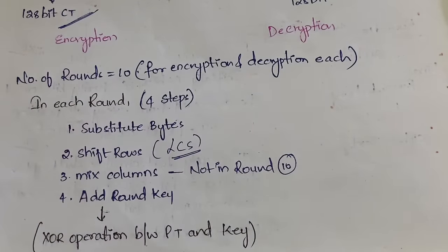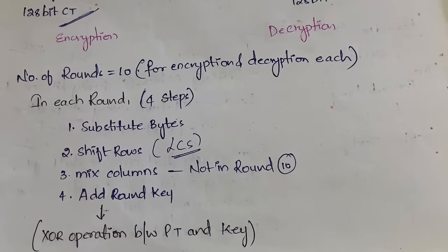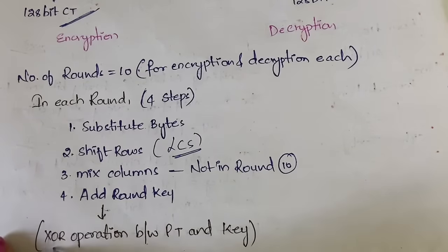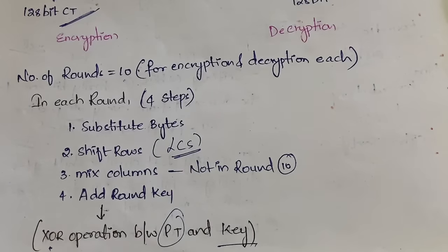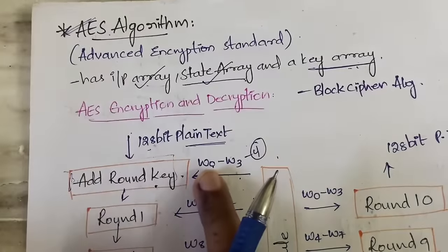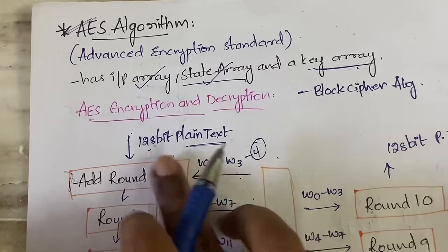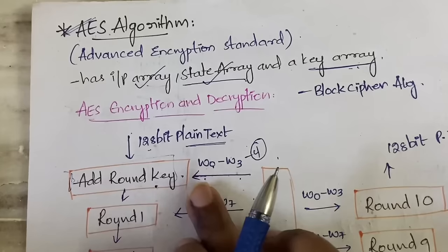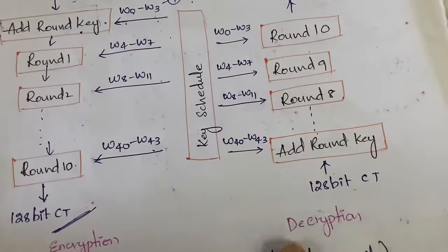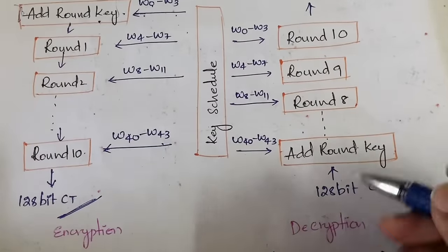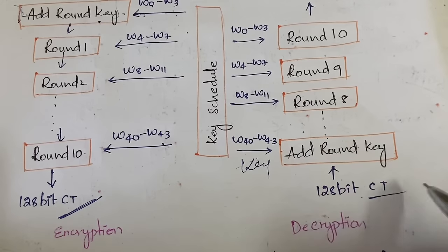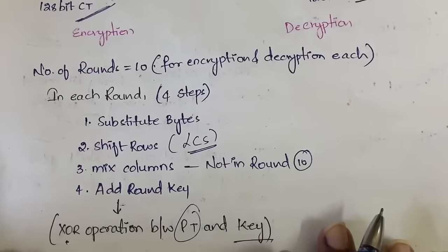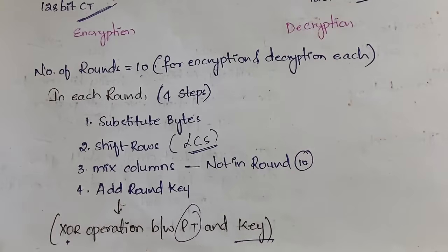In the Add Round Key step, an XOR operation is performed between the plain text and the key. In encryption, you have the plain text and the key and you perform XOR between these two. In decryption, the XOR operation is performed between the key and the ciphertext. That is what happens in Add Round Key. This is all about the AES algorithm.